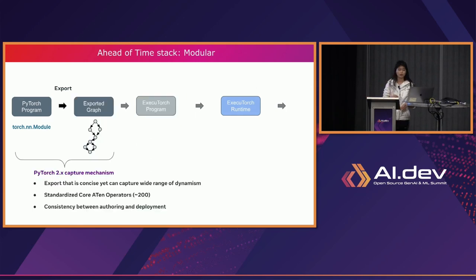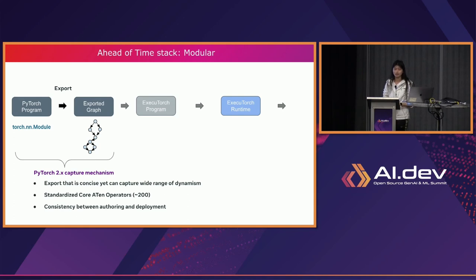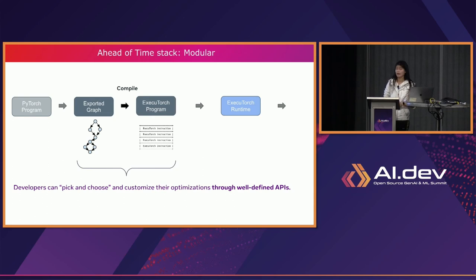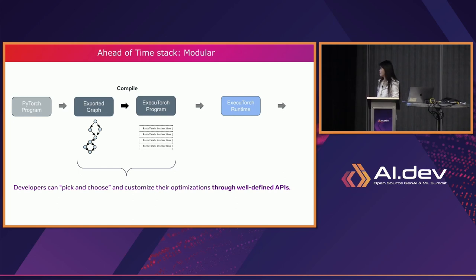The PyTorch 2.0 capture mechanism — torch.export — generates a sound graph that is concise yet captures a wide range of dynamism. It standardizes core ATen operators and ensures consistency between authoring and deployment. Users can then pick, choose, and customize their optimization through a set of well-defined APIs in the compile process.